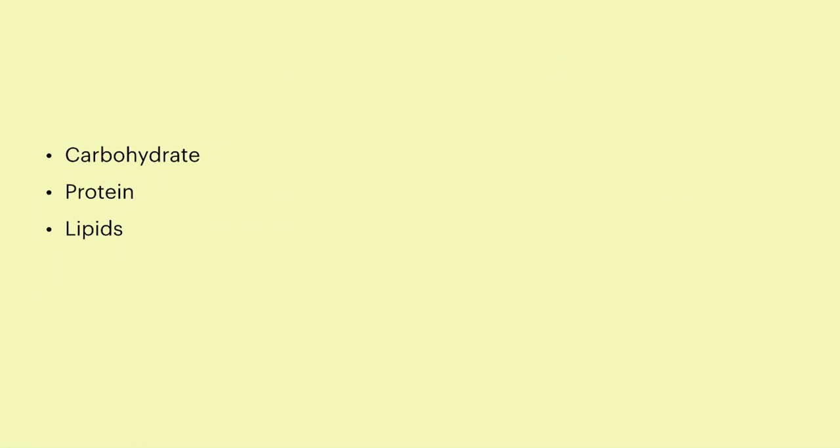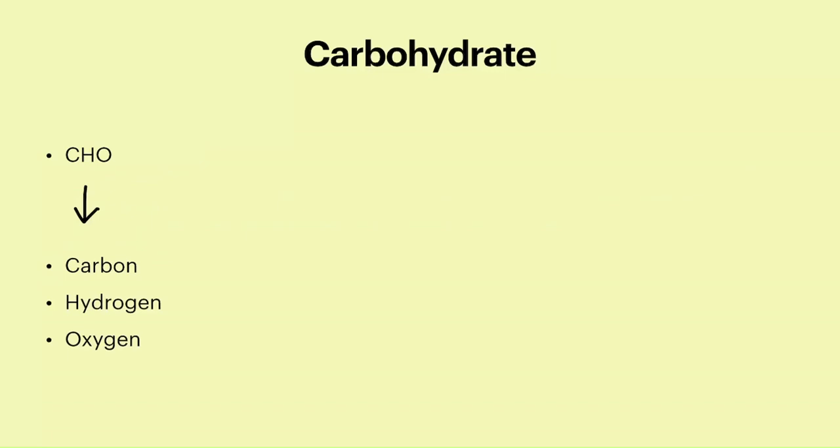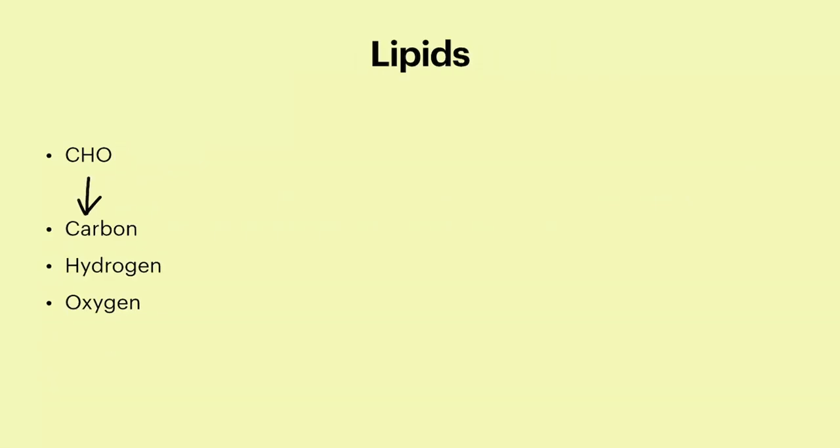You need to remember this order: carbohydrate, protein, and then lipids. For carbohydrate, you can remember CHOW - this has been given by Amoeba Sisters as well. CHOW means carbon, hydrogen, and oxygen. Protein is CHON - carbon, hydrogen, oxygen, and nitrogen. Then lipids are CHOW again.